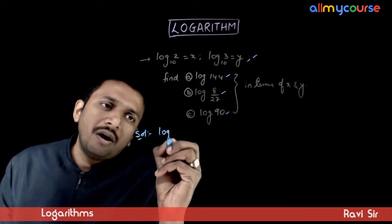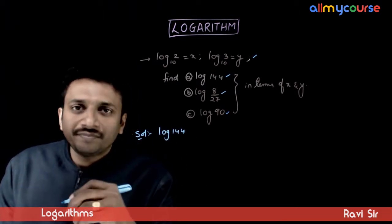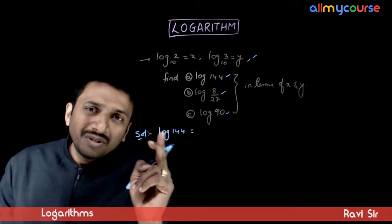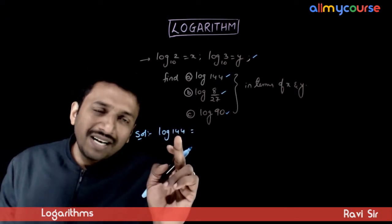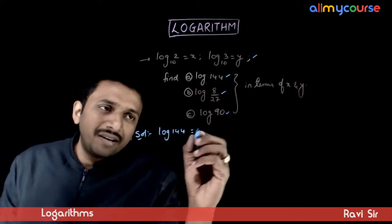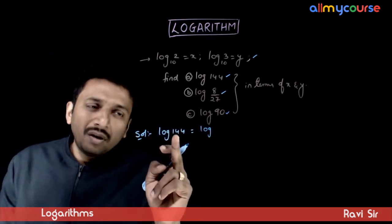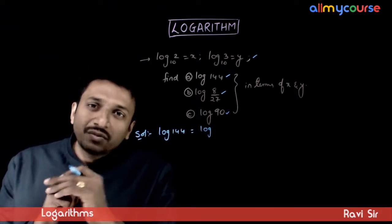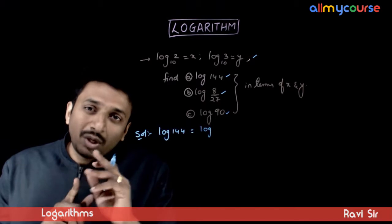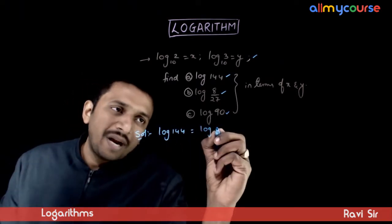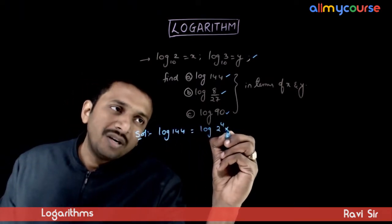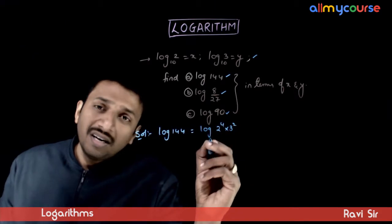So what is log of 144? I will use the properties of logarithms. First I will take the prime factorization. Log of 144 is nothing but 12 square, and 12 is nothing but 2 square into 3. So the prime factorization is 2 power 4 times 3 square to the base 10.